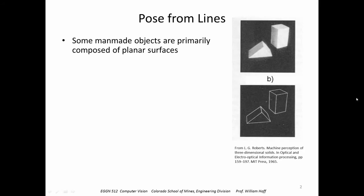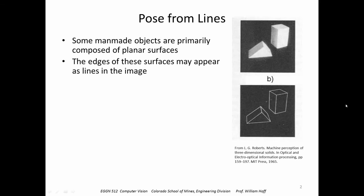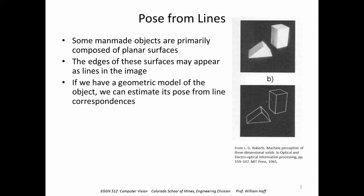Pose from lines. We can estimate the pose of an object from lines. This is particularly applicable to man-made objects, many of which are primarily composed of planar surfaces. The edges of those surfaces may appear as lines or line segments in the image. If we have a geometric model of the object — an a priori model — we can estimate its pose from the observed lines in the image.